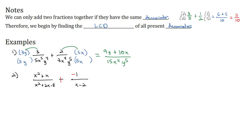Now, looking at our fractions, the first fraction's denominator can factor — that's x plus 4 times x minus 2. When we do that, we notice it already has an x minus 2, just like the fraction on the right. But the fraction on the right is missing the factor x plus 4, so we're going to multiply by the missing factor in order to get both fractions to have a denominator with x plus 4 and x minus 2.